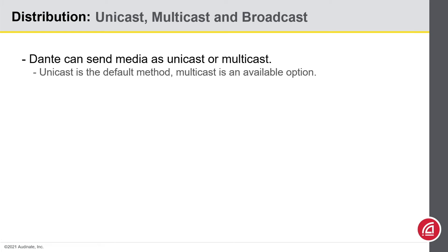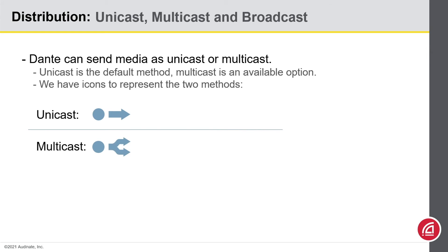Dante can send audio or video media as Unicast or Multicast. In our system we have two icons: the dot with the arrow indicates Unicast, meaning you're transmitting to one device. Multicast has an icon with a dot and a forked arrow, indicating that the network can split that signal for you. It's worth noting that Unicast traffic can cross a router to other networks — it targets an IP address and it's routable, which we would call a Layer 3 connection. However, Multicast is limited in scope and will not cross the router; its distribution is limited to the broadcast domain in which it sits.